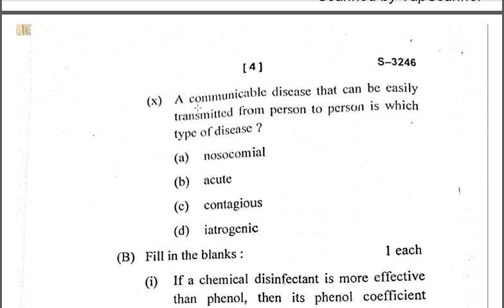Question ten: A communicable disease that can be easily transmitted from person to person is which type of disease? A) nosocomial, B) acute, C) contagious, D) iatrogenic. The correct answer is C, contagious — these are infections which can spread from one person to another, from infected to healthy, by different means such as touch, via fomites, inhalation, or ingestion.